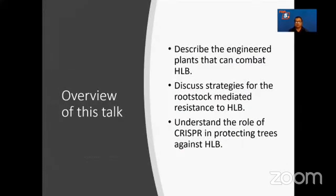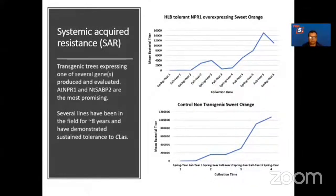The overview of this talk is to describe the engineered plants that can combat HLB, discuss strategies for rootstock-mediated resistance to HLB, and briefly talk about the role of CRISPR in protecting trees against HLB. We identified several SAR-inducing genes and produced many transgenic trees with Arabidopsis-derived NPR1 and the tobacco-derived salicylic acid binding protein 2 gene. From our research, we found that these two genes are the most promising in protecting trees against HLB.